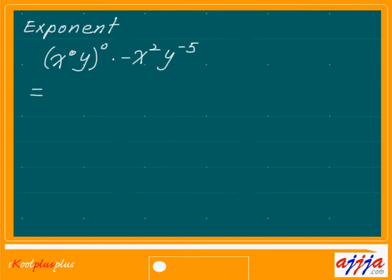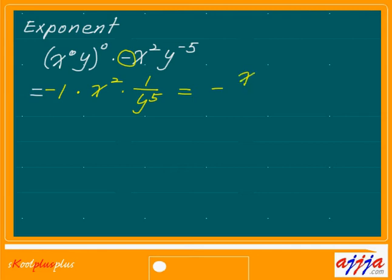Again, condition: x and y cannot be zero. Then if they are not zero, the left-hand side zero power means one. Now think about the sign first — there's a negative right there. No power on it, so we don't have to worry about that; just put the negative at the very front. Now all we have to think about is x to the second power, and y to the negative fifth power means 1 over y to the fifth power. So the answer is negative x squared over y to the fifth power.